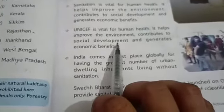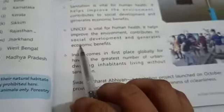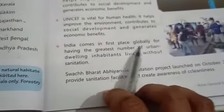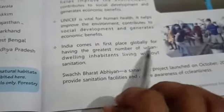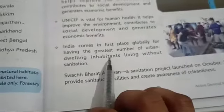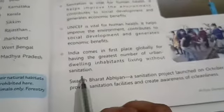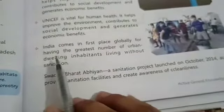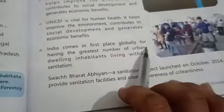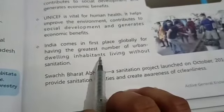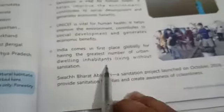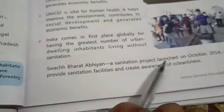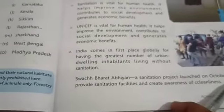India comes in first place globally for having the greatest number of urban developing inhabitants living without sanitation. This means India is the first place where people living in urban areas are living without proper sanitation.